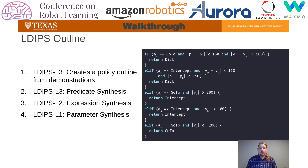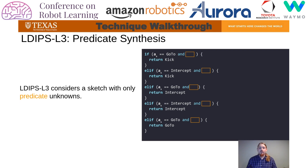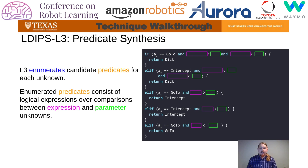Given that understanding of dimension-informed enumeration, I will now walk through a simple outline of the layered LDIPS approach. For the full technical details, I refer you to the paper. The first step of LDIPS starts at the top with layer 3, where from a given set of demonstrations, the structure of a policy is formed. For each unique observed transition in the demonstration, one branch with a blank predicate is created. Layer 3 creates and fills in predicate unknowns with the structure of potential predicates, and iteratively grows the candidates until either a satisfactory program is found or a fixed depth is reached.